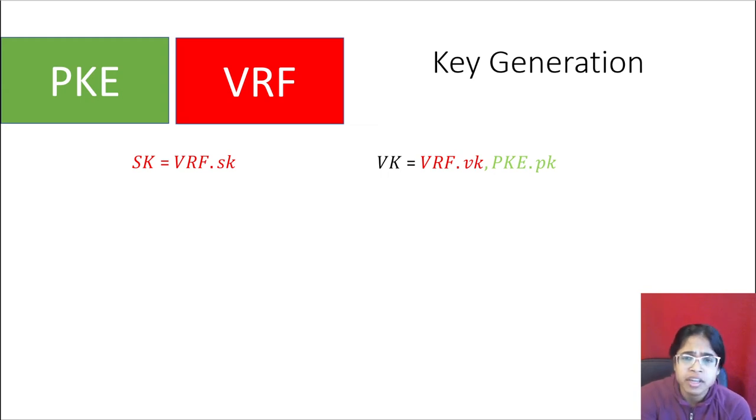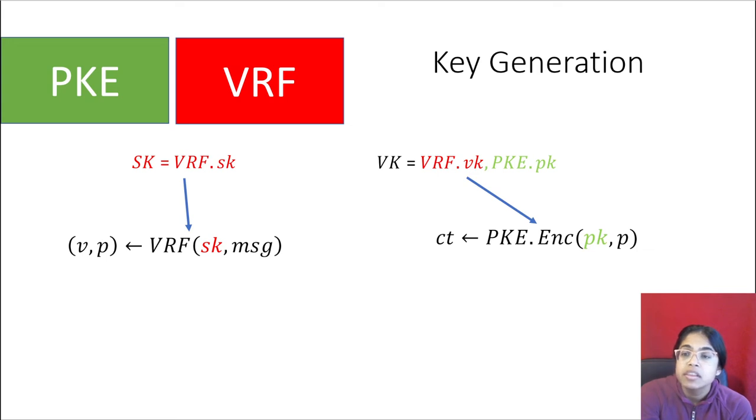Then at the time of signing, the signer will start by doing this. They will use their secret key to evaluate the VRF on their message. This is a little bit simplified, but they get a value and a proof. Then they'll use the verification key and they will encrypt the proof of the VRF inside the ciphertext. And because the value is pseudorandom and the ciphertext hides which key it is, nobody can tell which keys were used to create these two values. We're getting started with the signature. Let's continue.